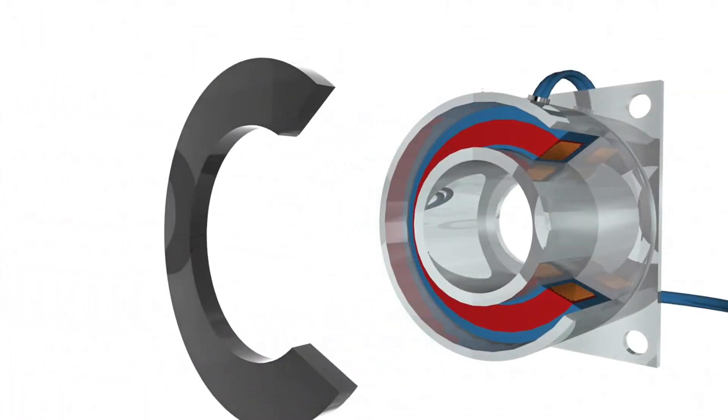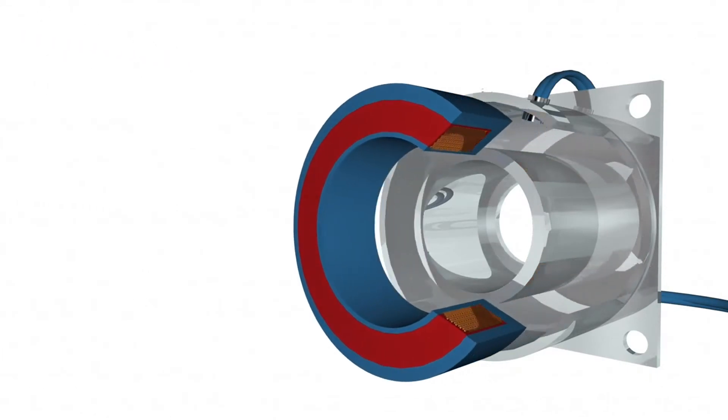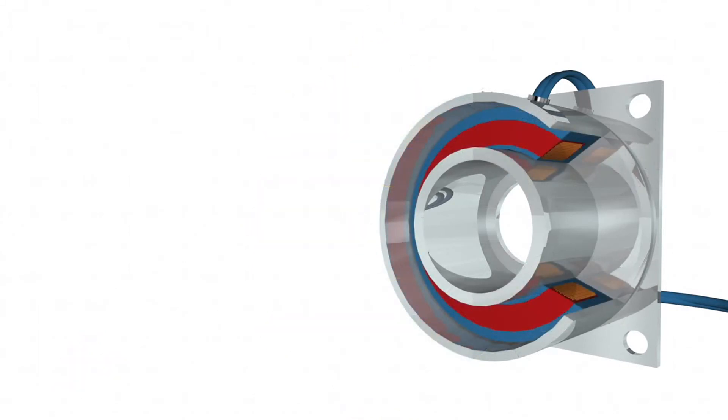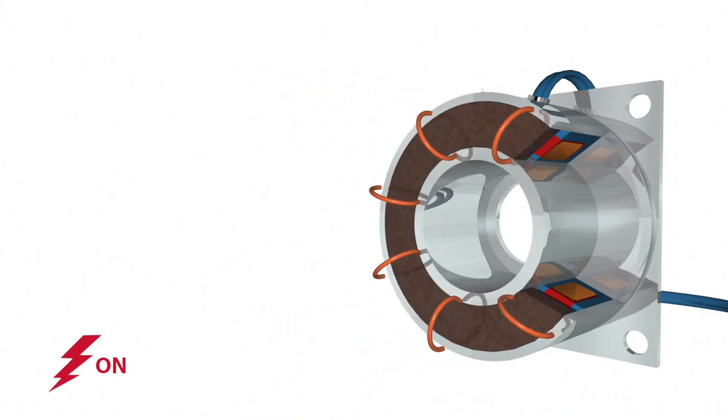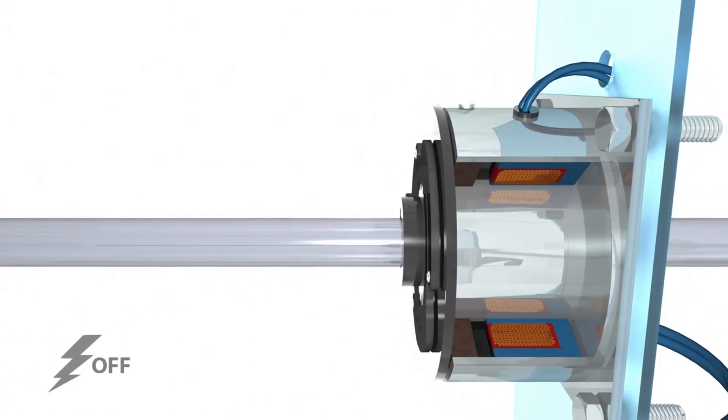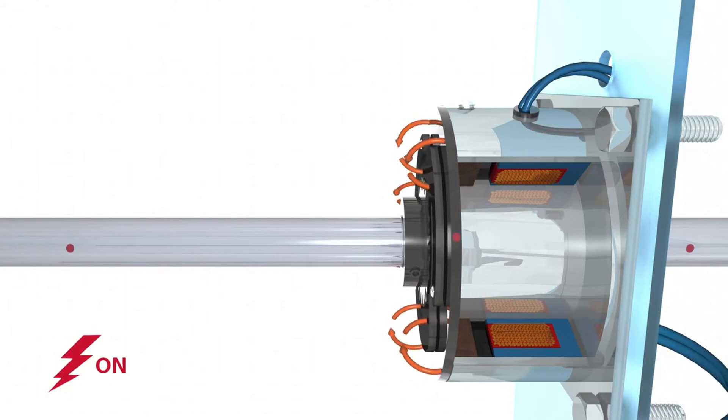Electromagnetic brakes operate via an electric actuation but produce torque mechanically. When voltage or current is applied to the brake, the coil becomes an electromagnet and produces magnetic lines of flux. This flux travels through the small air gap between the field coil and the armature, magnetically pulling the armature against the hub and creating a holding force.